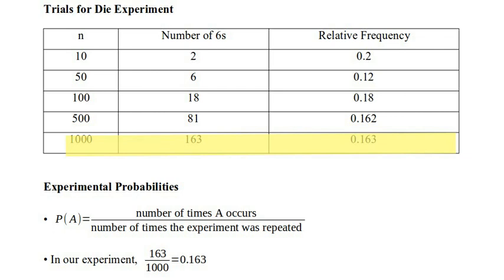So in our experiment, when we performed it the greatest number of times, I kind of got tired copying down these random numbers and then counting the number of sixes and all that stuff, so I stopped at 1000. We got 163 out of 1000 or about 0.163, 16.3%.